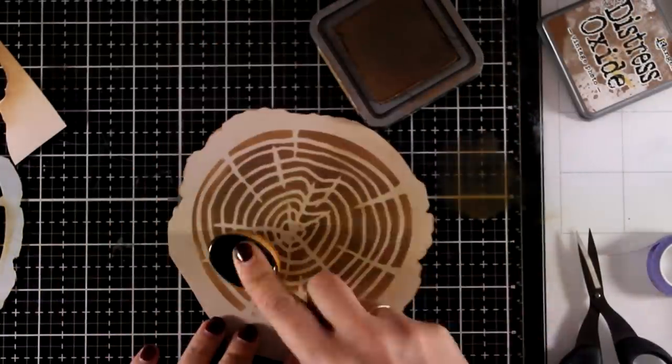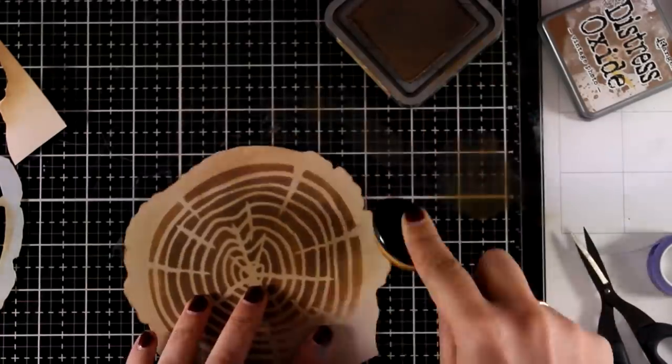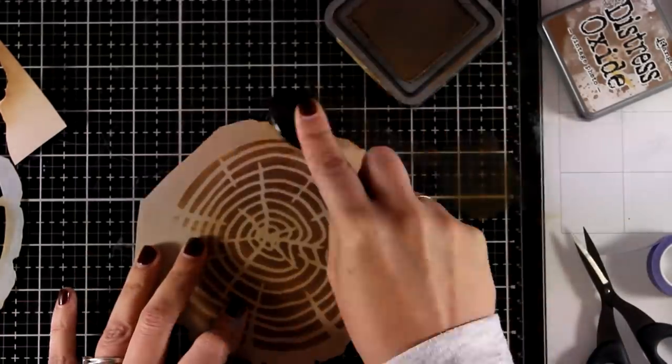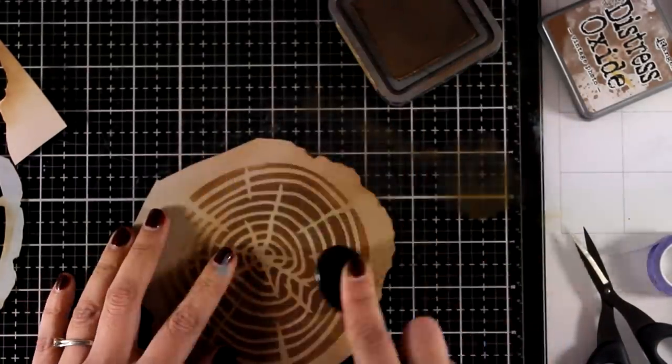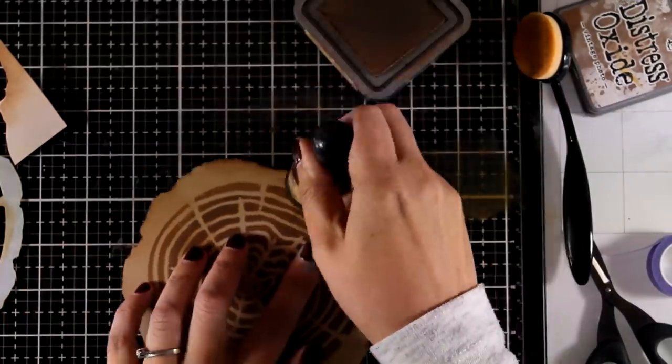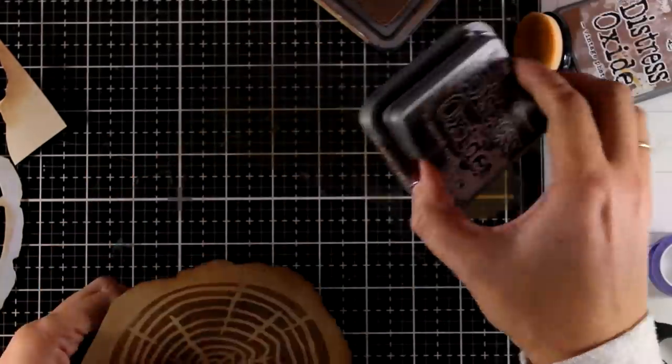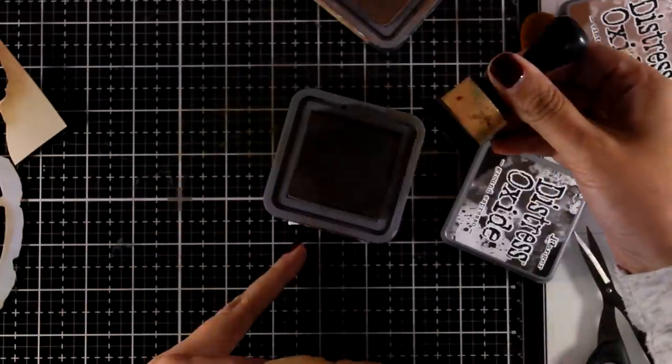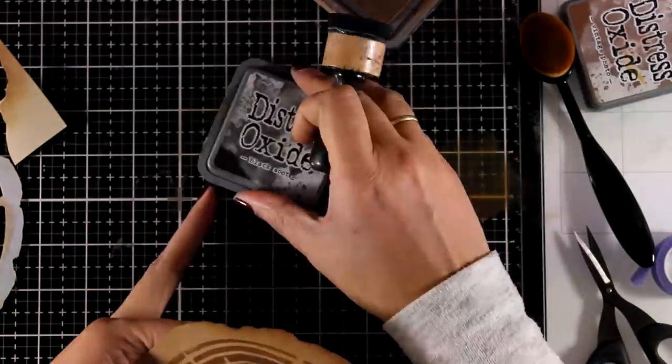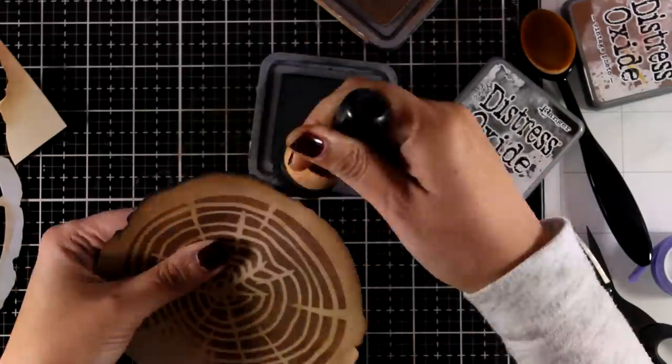Now again I am going over it with Distress Oxide ink again with a vintage photo but this time I am using my blending brush which is going to apply the ink lightly as you can see. So I don't get as deep in areas as I did previously with a blending tool. Finally on the edge I am using black soot to darken it up even more. And this is going to complete the look.